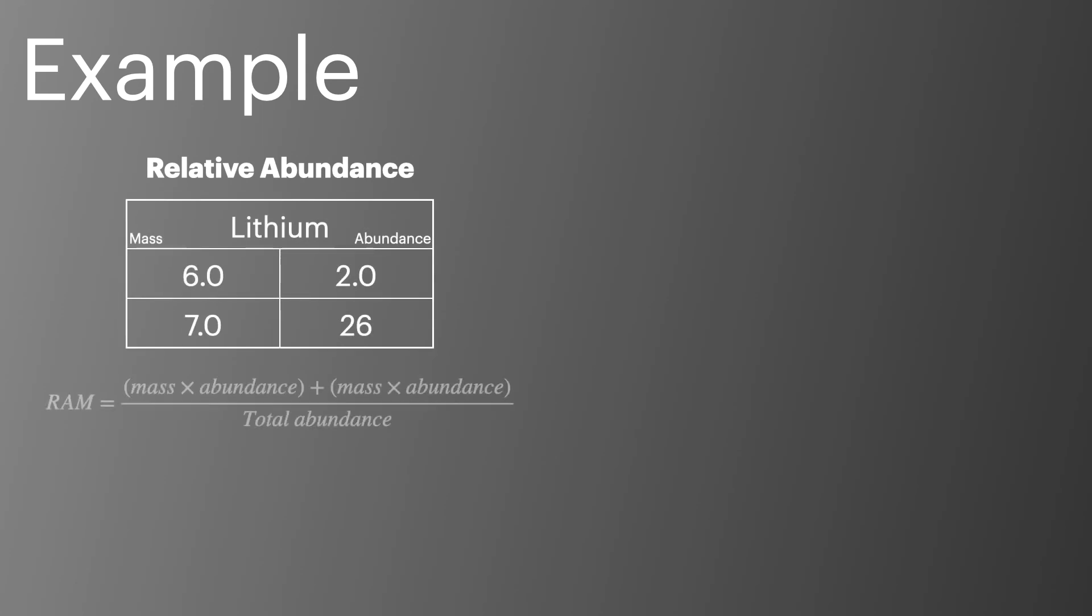In this first example, abundance is given as a ratio. We use the equation taking the total abundance to be 28, which gives a relative atomic mass for lithium to be 6.9.